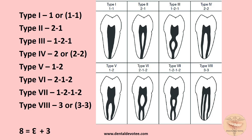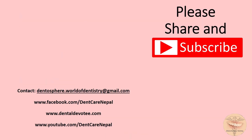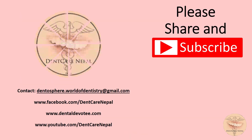In summary, for Vertucci's classification of root canal configurations, you only need to remember three anchor types: Type 1 is '1', Type 4 is '2', and Type 8 is '3'. If you like this mnemonic, give a thumbs up and drop a comment below. Thanks for watching — stay subscribed and share with your friends!